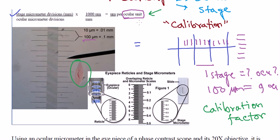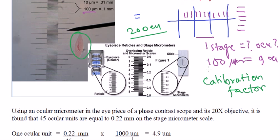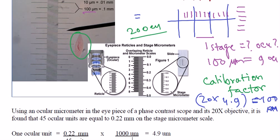Because you already have the ocular calibration factor, it is going to be the same for that microscope throughout. What we then do is measure the length of the object using only the ocular stage division. Suppose the length is 20 ocular divisions and the calibration factor is 4.9 — we multiply the calibration factor by the number of ocular divisions and get our answer, which is very close to 100 micrometers as the length of the actual organism.